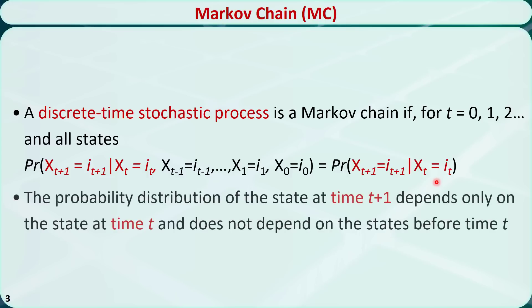The equation means the probability distribution of the state at time t plus 1 depends only on the state at time t. It does not depend on the states before time t.